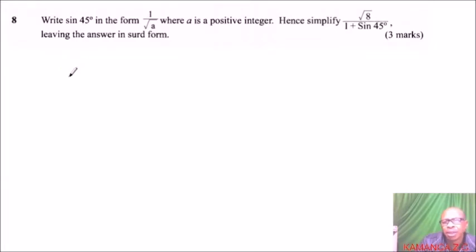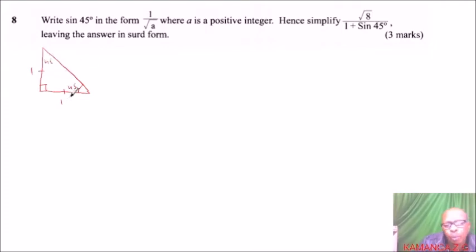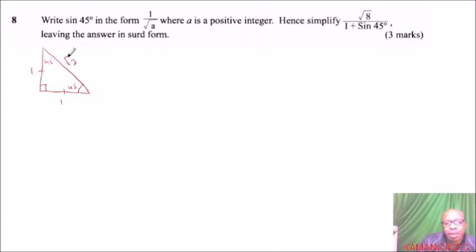45 degrees is a special angle and we can obtain it using the right-angle isosceles triangle. This side equals that side, so we say both legs are 1, making both angles 45 degrees. By Pythagoras, the hypotenuse is the square root of 1 squared plus 1 squared, which equals the square root of 2.